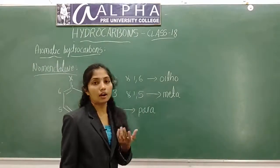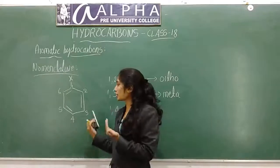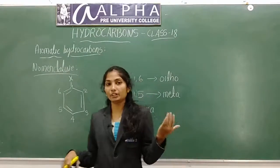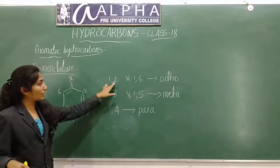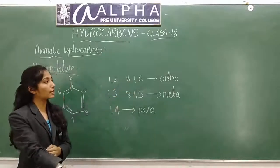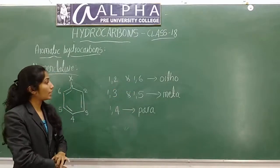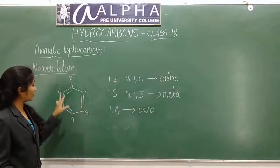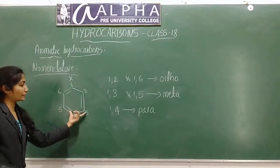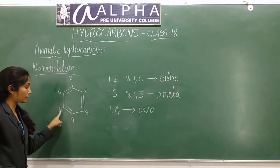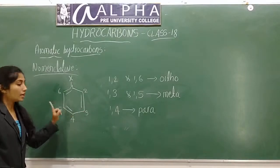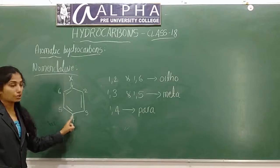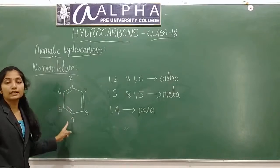Positions 1,2 and 1,6 are ortho positions; 1,3 and 1,5 are meta positions. If a substituent is present at position 3 or 5, it is a meta substituent. If it is present at the fourth position with respect to the first, it is a para substituent.